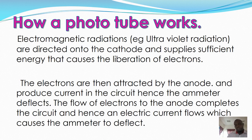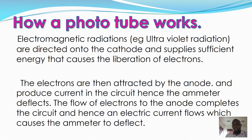So how does a photo tube really work? Electromagnetic radiation is directed to the cathode and supplies sufficient energy that causes the liberation of electrons. The electrons are then attracted to the anode and they produce current in the circuit, hence the ammeter deflects. The flow of these electrons completes the circuit and hence electric current flows.